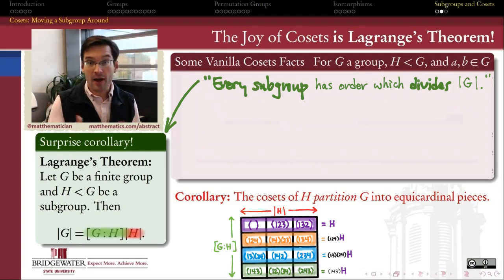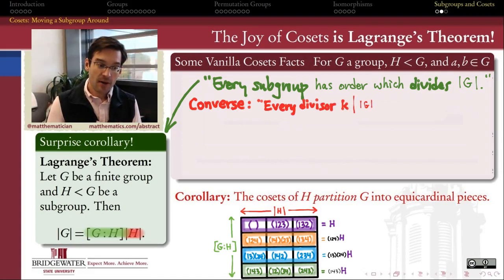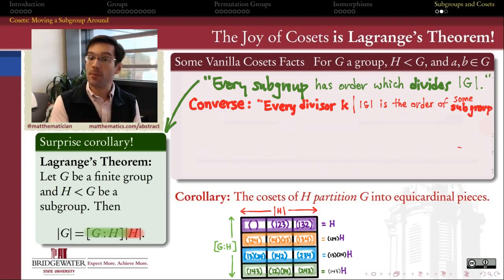What do I mean by the converse of Lagrange's theorem? If you think of Lagrange's theorem as saying every subgroup of G has order which divides the order of G, the converse I'm thinking of is the statement that if you hand me a divisor of the order of G, that there exists some subgroup whose order is equal to that divisor.